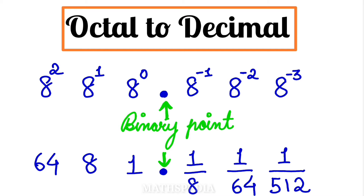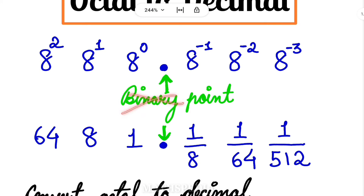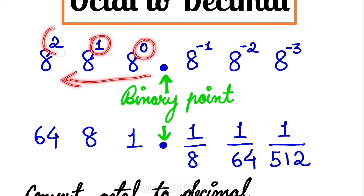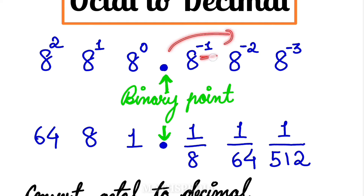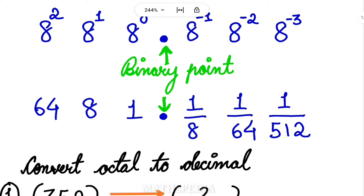As discussed before with binary to decimal conversion, whenever we convert anything to decimal we multiply by the base. For octal, the base is 8, so we multiply by powers of 8. On the left-hand side of the point, powers go in ascending order starting from 8 power 0 on the right. On the right-hand side of the point, powers go negative: minus 1, minus 2, minus 3 — same as binary to decimal, but using base 8.